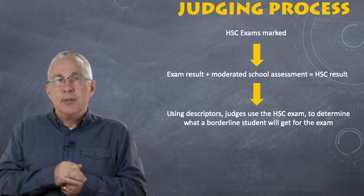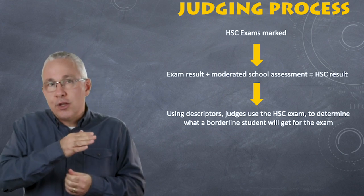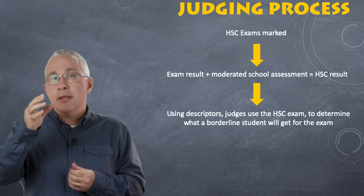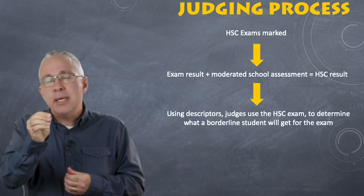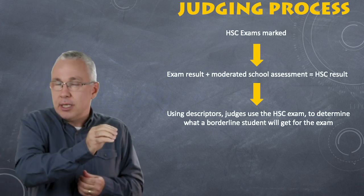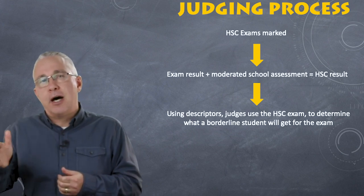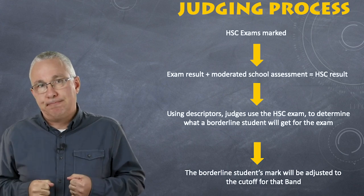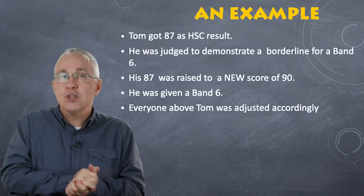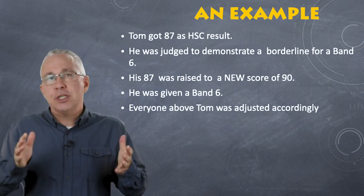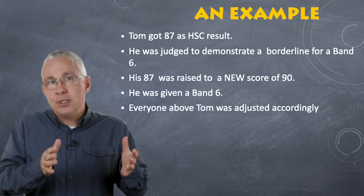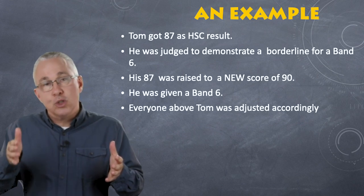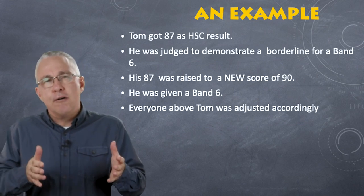As an example: they go through the exam, give a mark to each question, and ask themselves what would a bare minimum band 6 student get for that question. They do this for each of the borderlines, end up with a final mark, and then that mark is adjusted to meet the band criteria. Let's say we talk about Tom — Tom gets 87. During the judging process, they find that a person who gets 87 has met the minimum requirements of a band 6.